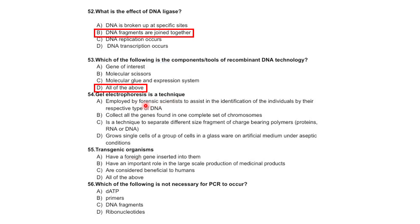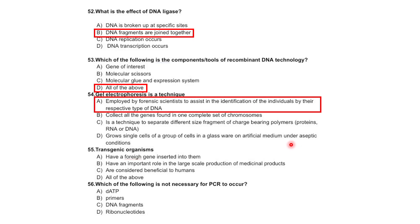Gel electrophoresis is a technique used by forensic scientists to assist in the identification of individuals by their DNA. A genome collects all the genes found in one complete set of chromosomes. Gel electrophoresis separates different size fragments of charge-bearing polymers — proteins, RNA, and DNA. Transgenic organisms have foreign genes inserted into them and have an important role in large-scale production of medical products.